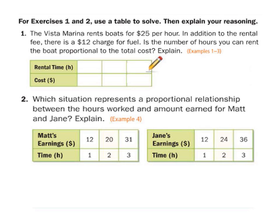So the Vista Marina rents boats for 25 bucks an hour. Uh-oh, in addition to the rental fee, there's a $12 charge to fuel. Is this proportional? No, it is not. Let's use one, two, and three hours. So for one hour, it's going to charge me the 25 bucks an hour plus the $12 fuel charge. So I got 12 plus 25, give me 37, right? So after another hour, it's going to charge me another 25 smackers. So that's 62. So after another hour, they're going to charge me another 25 bucks. Is that 87?